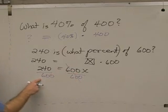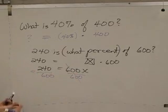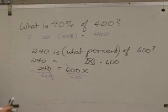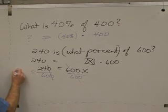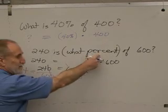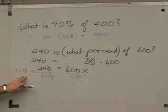And when we punch that in, we'll get a decimal. 240 divided by 600, or we could reduce it first. 24 divided by 60, get 0.4. Is that right? 0.4. But it did say what percent, so we'd want to change that to a percent. 40%.